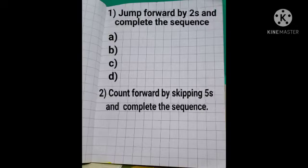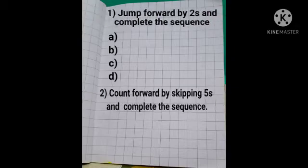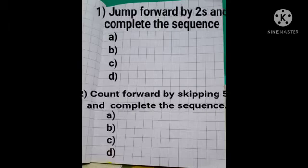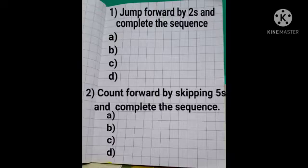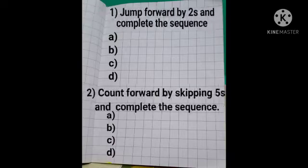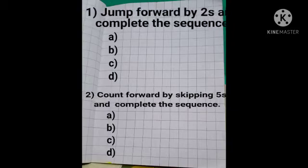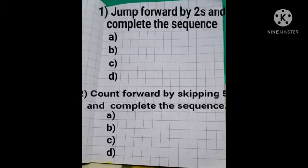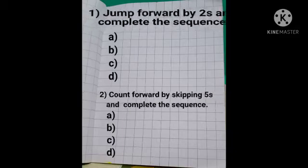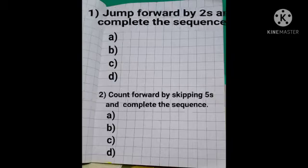Then you have to copy the second exercise in your practice book page 13: count forward by skipping fives and complete the sequence. Copy all the questions — there are also A, B, C and D, four options. Fill in the answers yourself.